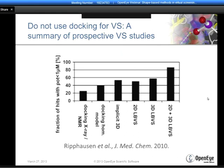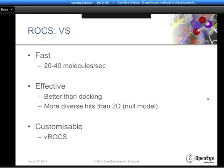To summarize virtual screening with ROCS: it's a very fast method, around 20 to 40 molecules per second depending on the level of conformational sampling. It's very effective—certainly better than docking, as consistently seen in our own studies and in the literature. Compared to the null model 2D, we see superior performance and higher diversity in the hits. I'll talk a little at the end about the VROX graphical interface and how it helps you customize queries to improve virtual screening performance. But for now, let's move on to lead hopping.